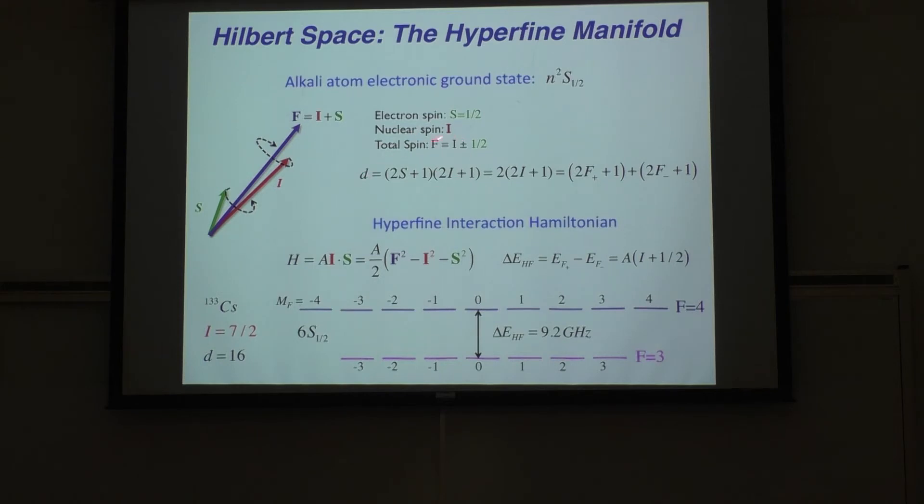I know not everybody here is an atomic physicist. So let me just say a few things about our system. The atoms that we often work with in these laboratories are alkali atoms because they have only one valence electron to manipulate. The atoms are going to be in their electronic ground state, and all of the information is in their spin. So we have an electron spin, and then we have a nuclear spin. The electron spin and the nuclear spin are coupled together through the so-called hyperfine interaction to give a total spin F. That's the spin of the atom.